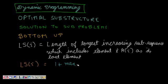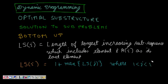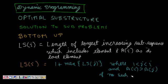So LS(i) = 1 + max of LS(j), where 1 ≤ j < i and a[i] > a[j]. If no such j is found, then LS(i) = 1.